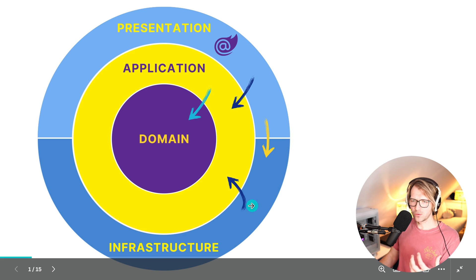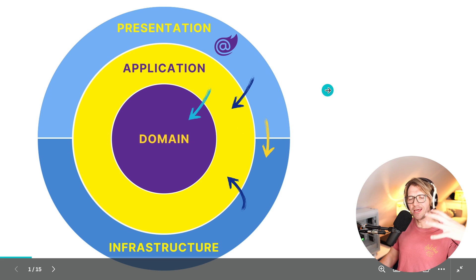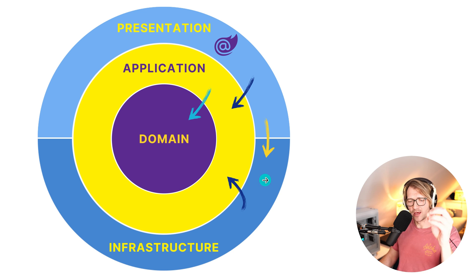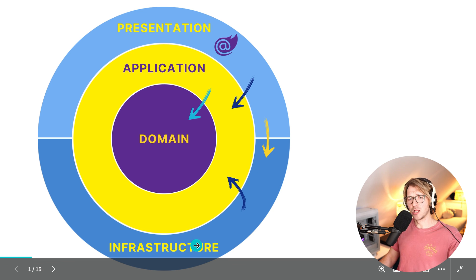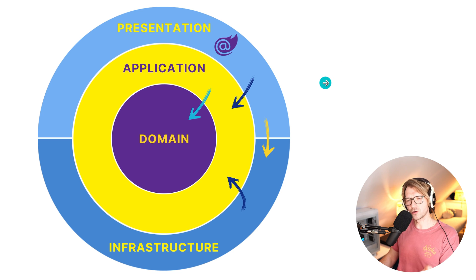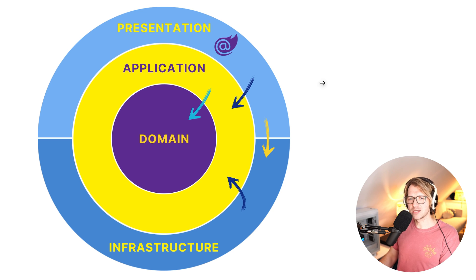In the infrastructure layer — which comes after the application layer — you would see external services. The best example is data persistence: database access, Entity Framework. Entity Framework has its place in the infrastructure layer. Then we have the presentation layer, which is the user interface. For a web application it's often called 'Web UI', so in Blazor it makes sense to call this the Web UI project.